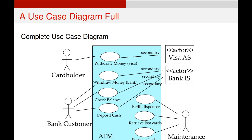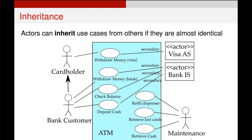So we have a 'Withdraw Money' that is now called Visa, and a 'Withdraw Money' for some internal bank system. Depending on the number of actors you have, you may end up with quite a few duplicate use cases like this, and that is absolutely fine. We'll see, once we get into use case bodies, why this is important.